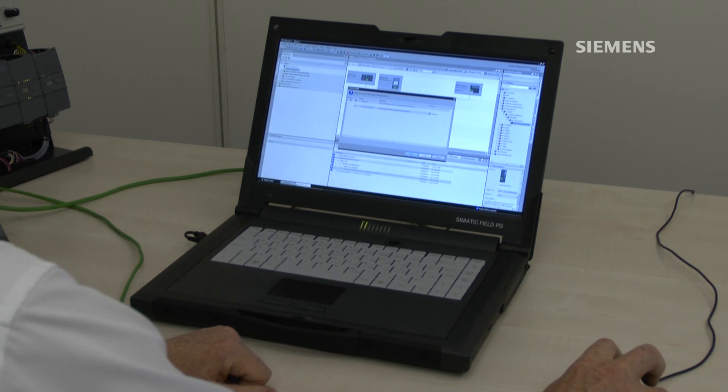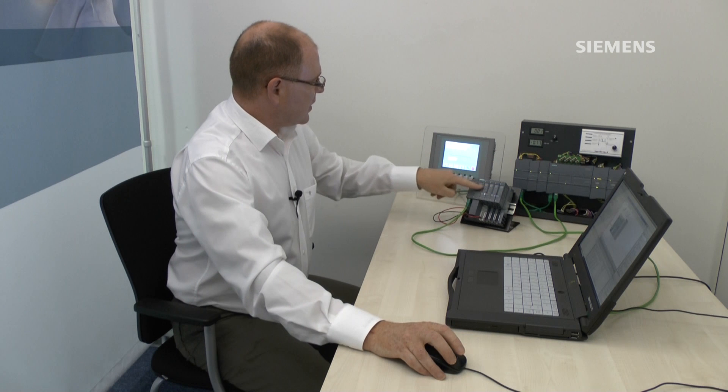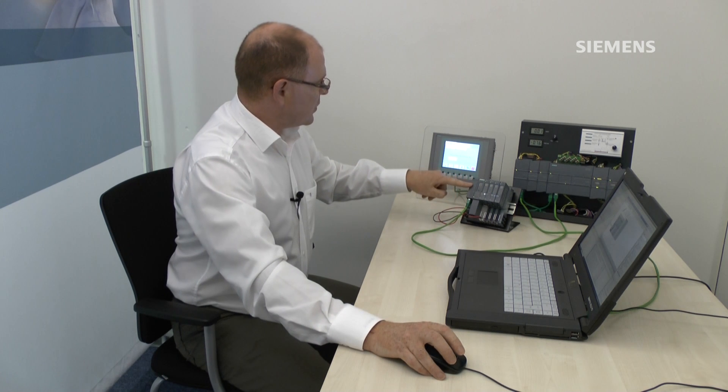And I start the CPU and finish the configuration. When the CPU goes into run all the LEDs are green as are the LEDs on the ET200SP node. So everything is okay.